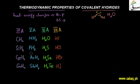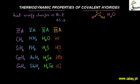In Group 4A we have carbon, silicon, germanium, and tin hydrides. We have Group 5A, 6A, and 7A hydrides as well. This lecture will be in two parts: one discussing hydrides group-wise, and the other period-wise.